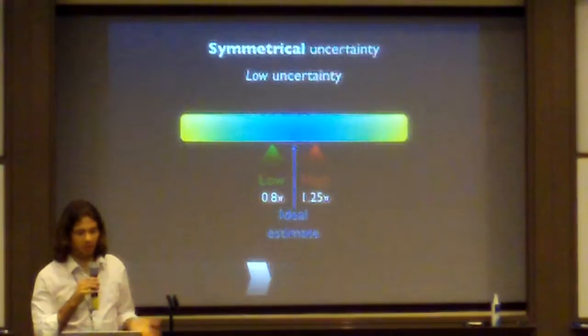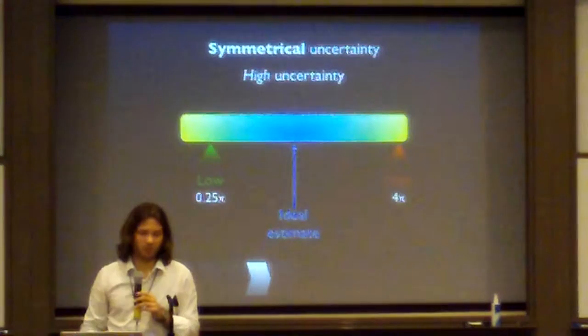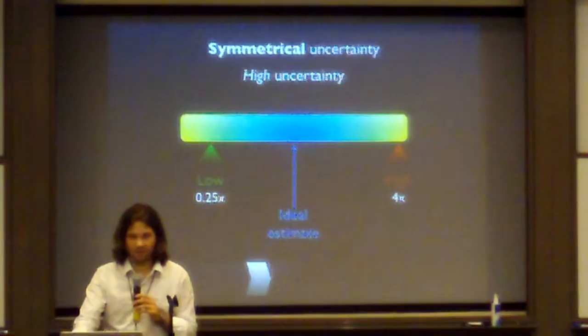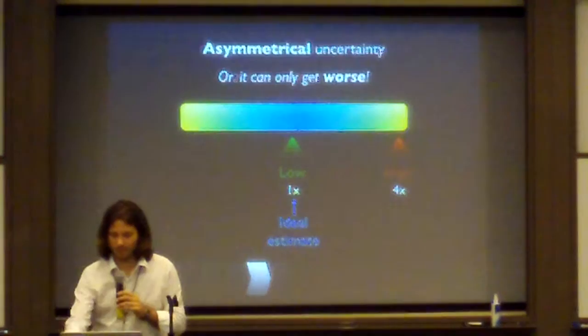So, for example, if we had a symmetrical uncertainty, the low rate would be, like in this case, it would differ from 0.8 to 1.25x. In the case when we had a high uncertainty, it would differ from 0.25 to 4x. This is the highest uncertainty we can think of. But there's also asymmetrical uncertainty, which you'll probably all know. This would take at least this much time. Or it can only get worse. From 1x to 4x or 1x to 2x.